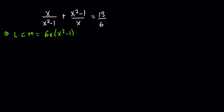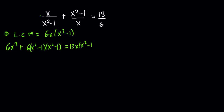Multiplying through gives 6x² plus 6x(x²-1) times another (x²-1), and this will be equal to 13 times x(x²-1). Expanding the right-hand side gives 13x³ - 13x.